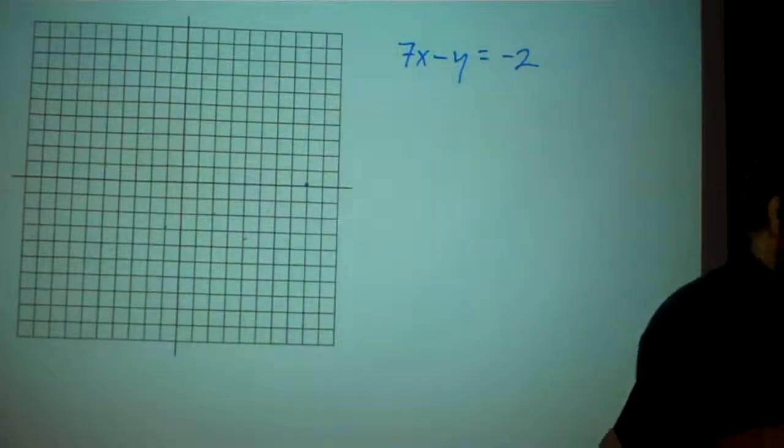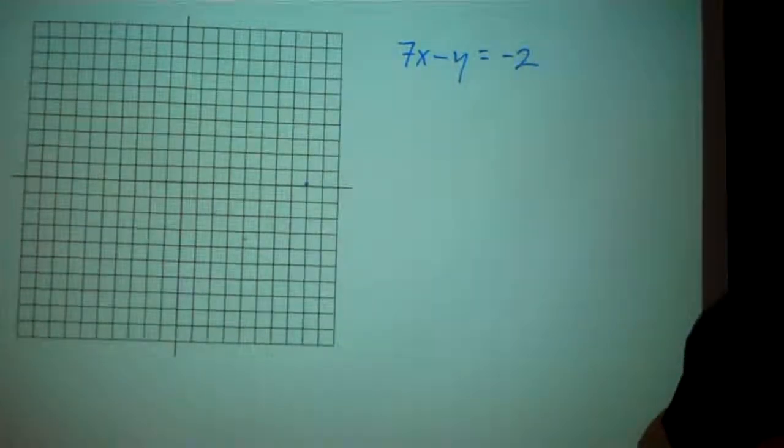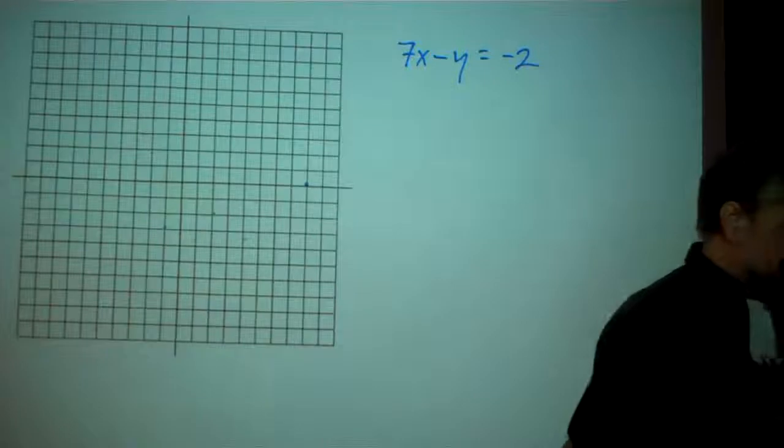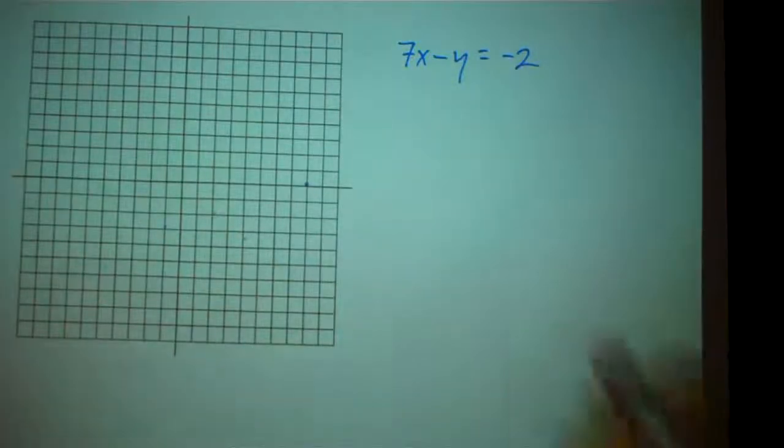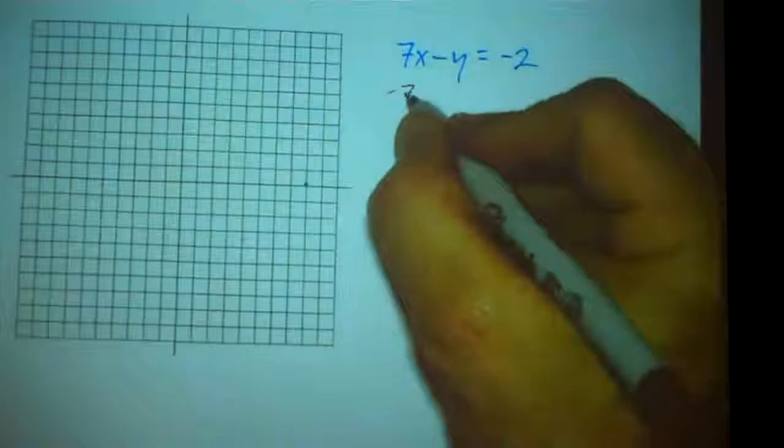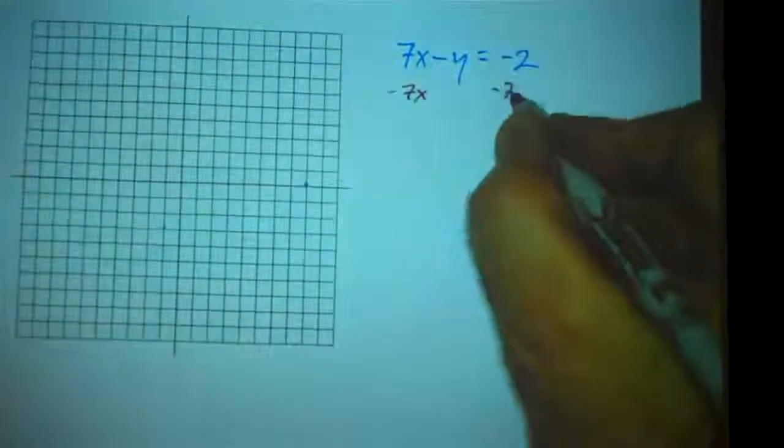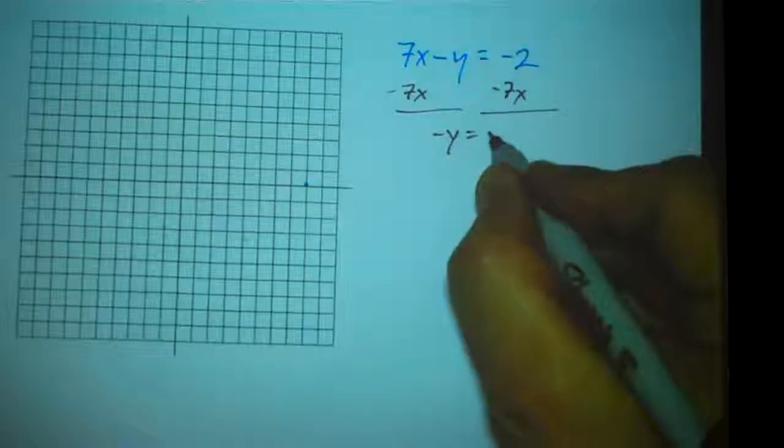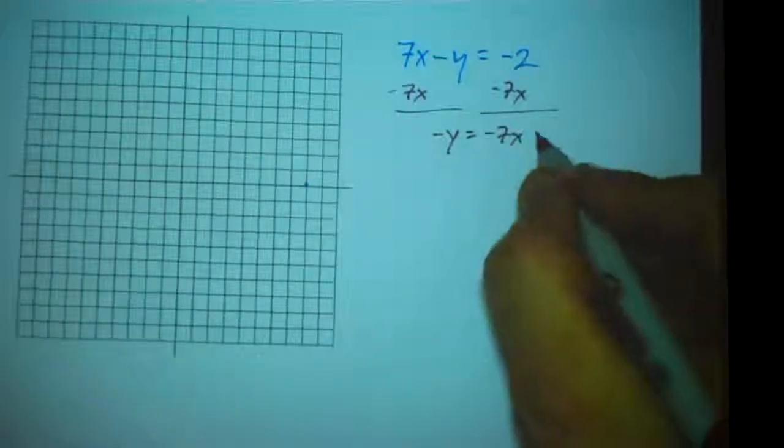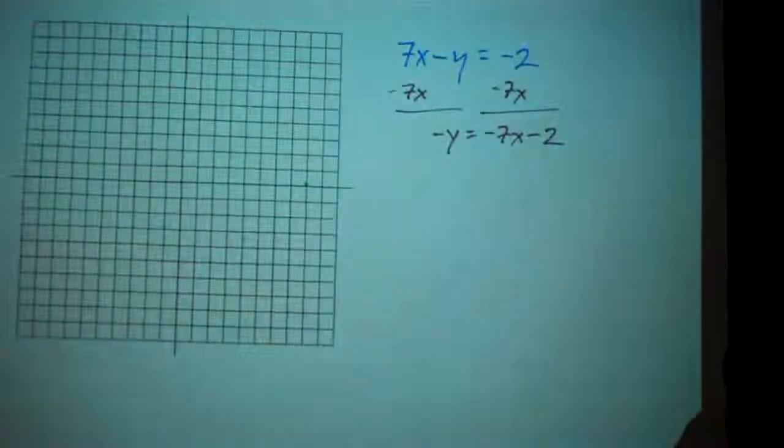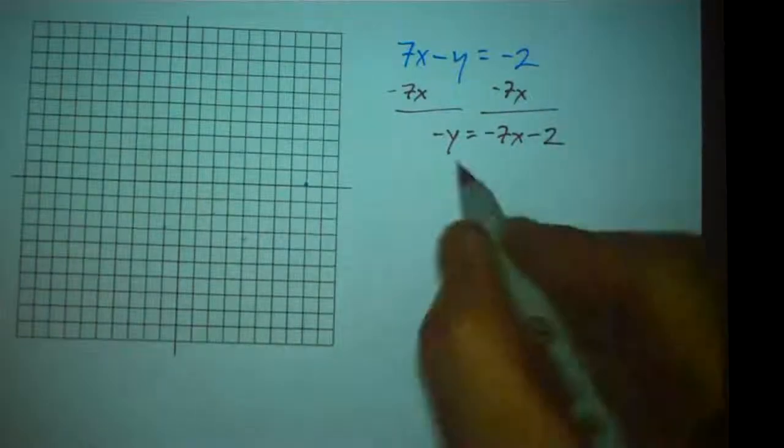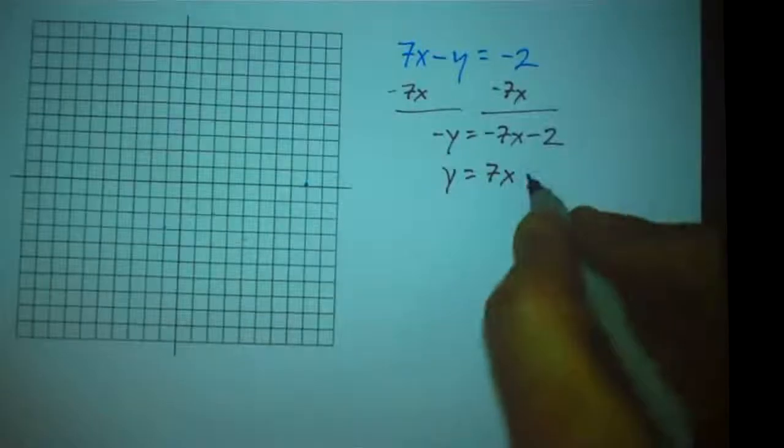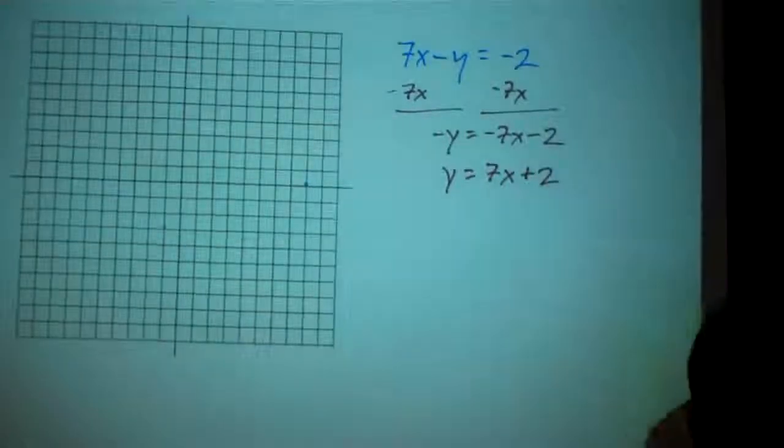One more example here. 7x minus y equals negative 2. Again, let's just solve for y. And as we solve for y, we would say, let's subtract 7x from both sides. And I get negative y equals negative 7x minus 2. And so let me just multiply both sides by negative 1. And that would give me positive y equals positive 7x plus 2. Great. I can do that.